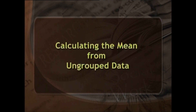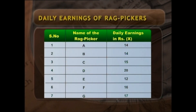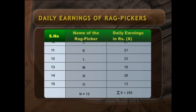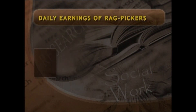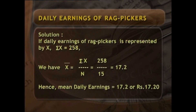Calculating the mean from ungrouped data: the above formula can be used to calculate arithmetic mean from ungrouped data. The following table gives the daily earnings of 15 rag pickers. The total number of rag pickers N = 15 and Σx (the total earning) = 258. Solution: if daily earnings of rag pickers is represented by x, then Σx = 258. We have x̄ = Σx/N = 258/15 = 17.2. Hence mean daily earnings = rupees 17.20.